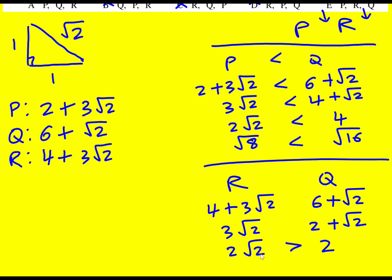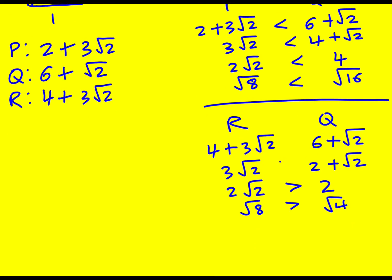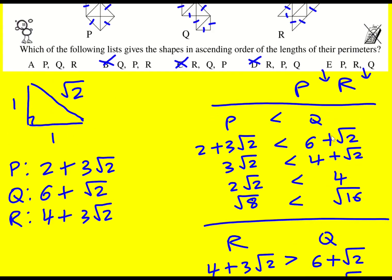I could even if I wanted to, I could write it as √4 and √8, you know if that helps. It's clearly bigger, which means that that's bigger, which means that R is bigger than Q.